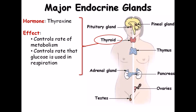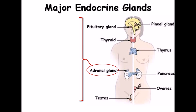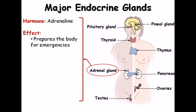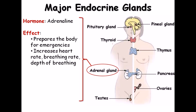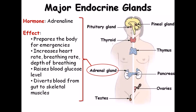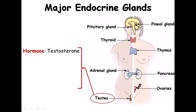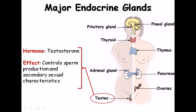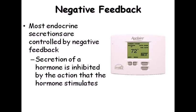The thyroid gland produces thyroxine, which controls the rate of metabolism, controls the rate at which glucose is used in respiration, and promotes both axial and lateral growth in the body. The adrenal gland secretes adrenaline, which prepares the body for emergency situations — it increases heart rate, breathing rate and depth, raises blood glucose levels, increases basal metabolic rate, and diverts blood from the gut to skeletal muscles.